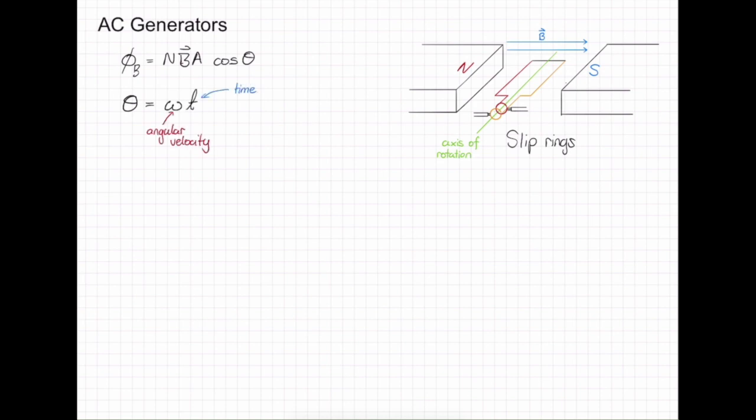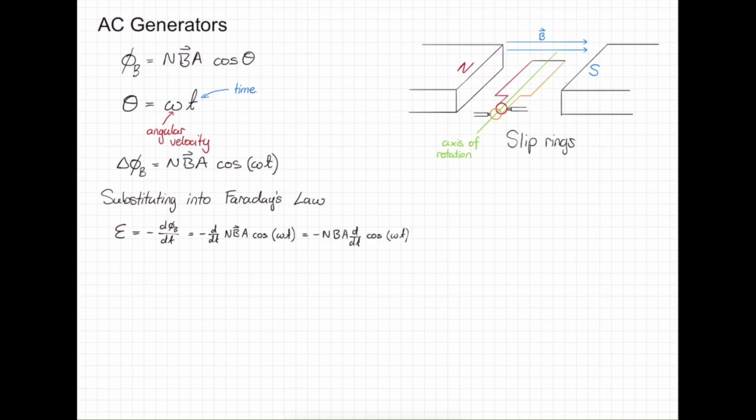This gives us the equation for our changing magnetic flux. Now that we have our changing magnetic flux, we can substitute this into Faraday's law. Substituting in our value for magnetic flux, bringing out all the constants so that we're just left with our dependence on time. Now we can solve this differential equation, giving us the EMF for an AC generator.